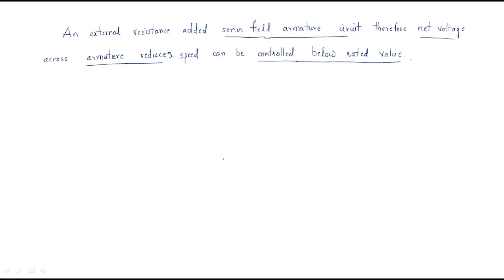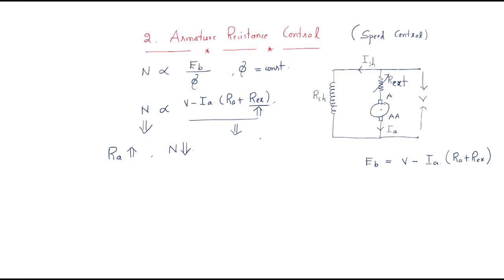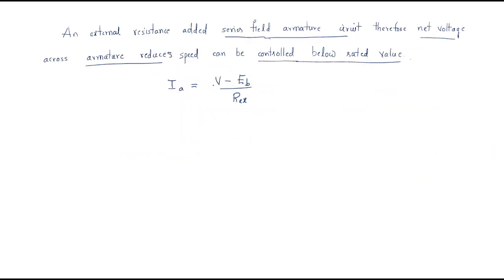The armature current can be written as: Ia = (V minus Eb) divided by (Ra + R_external). The back EMF is generated across the armature, and the armature current is determined by this voltage drop divided by the resistance. However, when external resistance increases, the effective armature resistance changes, which affects the armature current.